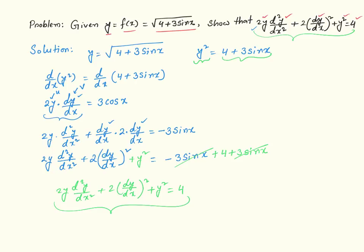Let me quickly summarize what I have done here. I took the given y value and squared it to get y squared equals 4 plus 3 sine of x. Then I took the derivative of both sides to get the first derivative equation, then took the derivative again to get the second derivative equation. At the very last step, I added y square to both sides, things cancelled out, and that gives the final answer. I hope this discussion was helpful. Thank you very much.